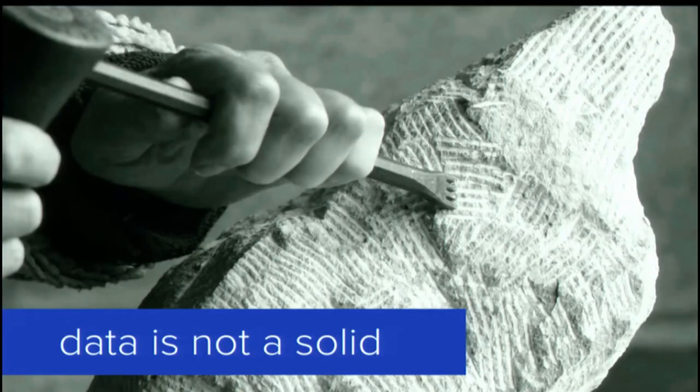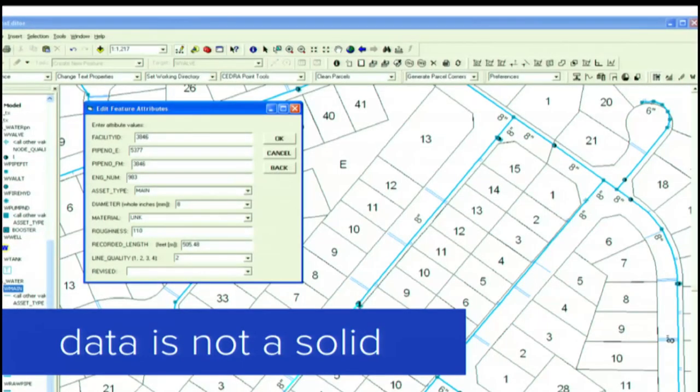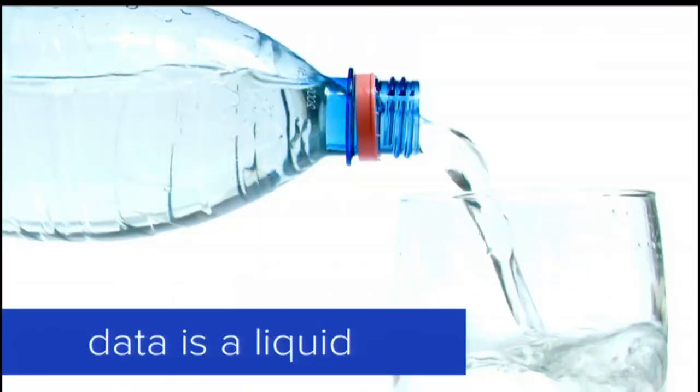The first thing FME taught me was that data is not a solid. Because when you look at data through the lens of operational data maintenance, it looks a lot like a solid. It's a big mass, and you chip away at it one little bit at a time, make incremental changes — add a record, edit a shape, modify a record. It doesn't change very fast, and big changes take a lot of work. But when you look at data through the lens of the FME, you learn that data is not a solid. It's a liquid.